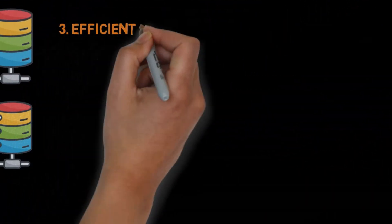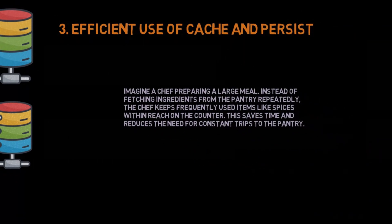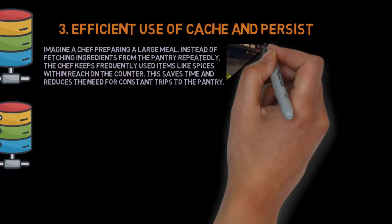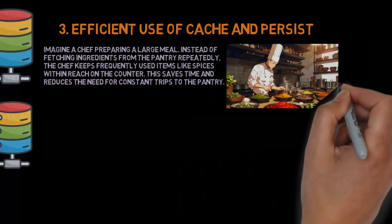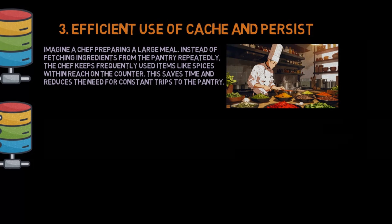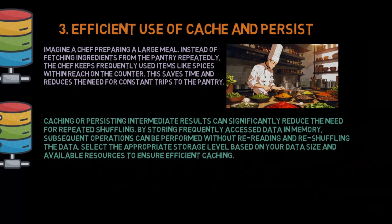Third, make efficient use of cache and persist. Imagine a chef preparing a large meal — instead of fetching ingredients from the pantry repeatedly, the chef keeps frequently used items like spices within reach on the counter, saving time and reducing constant trips. Similarly, caching or persisting intermediate results can significantly reduce the need for repeated shuffling. By storing frequently accessed data in memory, subsequent operations can be performed without rereading and reshuffling the data. Select the appropriate storage level based on your data size and available resources to ensure efficient caching.